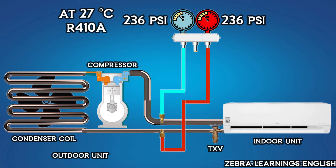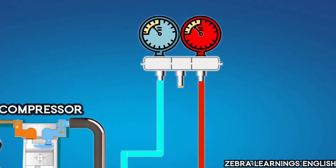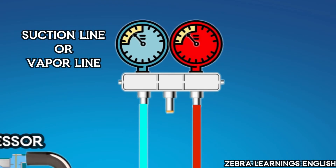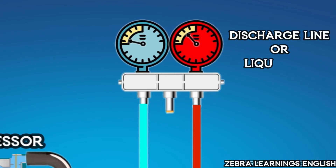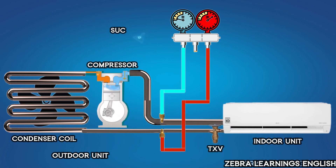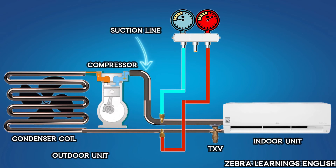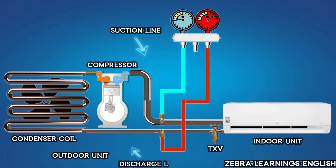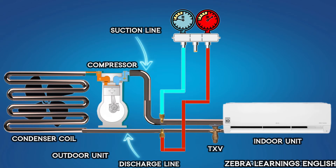When the unit starts, the pressure in the suction line decreases and the pressure in the discharge line increases. The coil with the larger diameter is the suction line, and the coil with the smaller diameter is the discharge line.